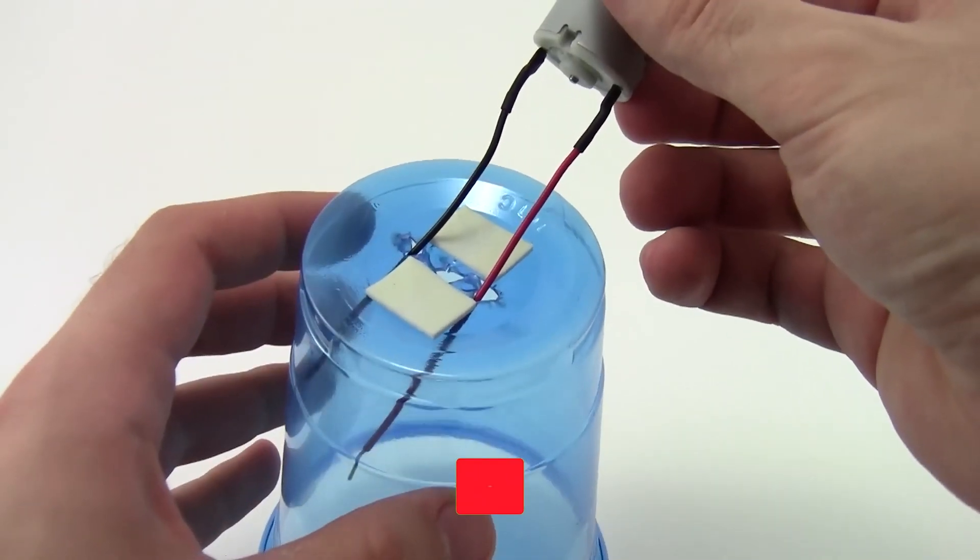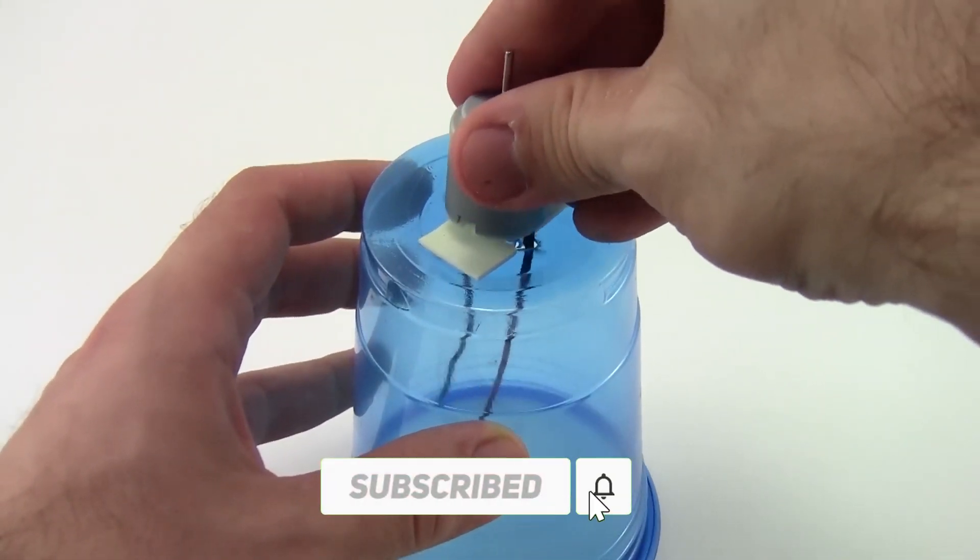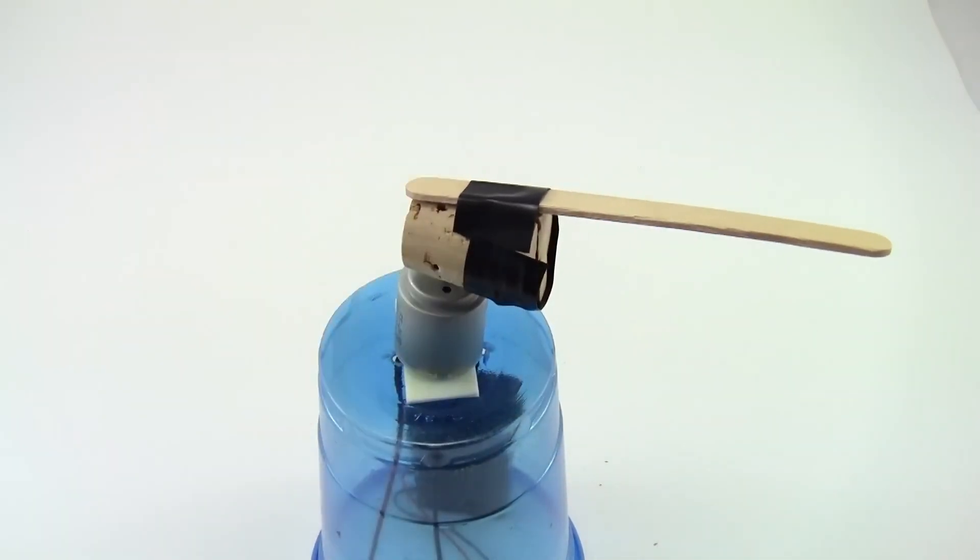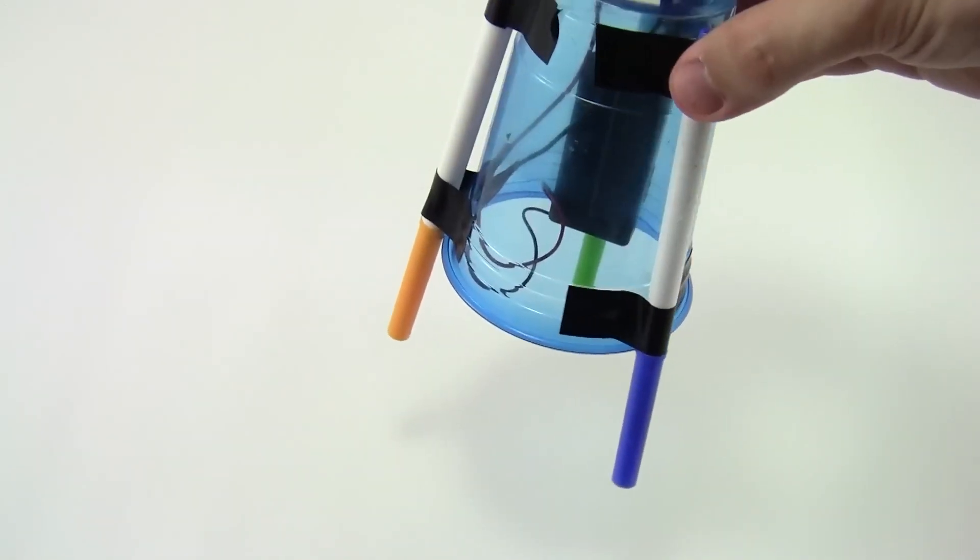You can also use a glue gun, scissors and tape for this project. To use your ArtBot turn on the motor and place it on a sheet of paper. Watch how it creates colorful patterns and shapes with the markers.